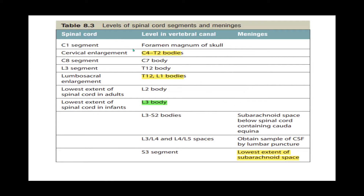Here are some important facts. The spinal cord starts at the level of the C1 vertebra, as a continuation from the medulla oblongata. The medulla passes through the foramen magnum and then becomes the spinal cord at the level of the foramen magnum, at the first cervical vertebra C1.